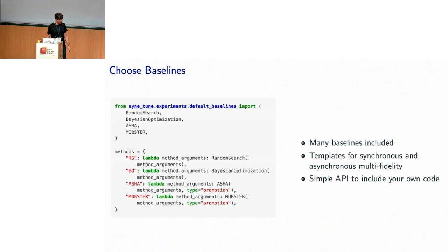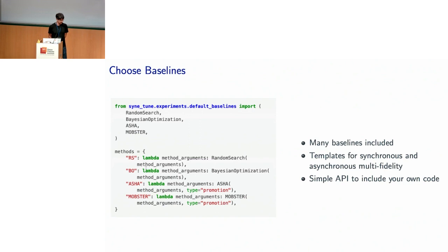Now let's say we want to compare these four different methods in SyneTune. All of these methods are implemented as baselines — we have many more baselines included. The only thing you need to do is select them, put them in a dictionary saying these are the methods I want to compare. We have templates for synchronous and asynchronous multi-fidelity methods that you can extend with your own decision-making idea, and there's a simple API to include your own code behind your latest HPO idea.